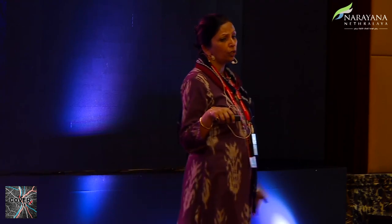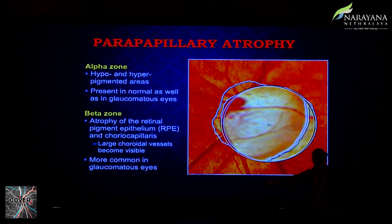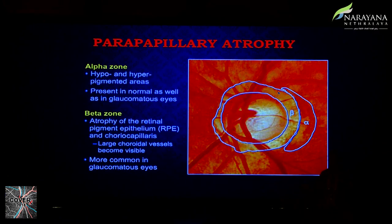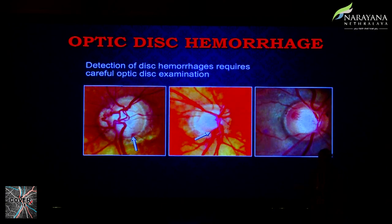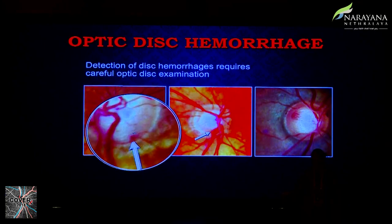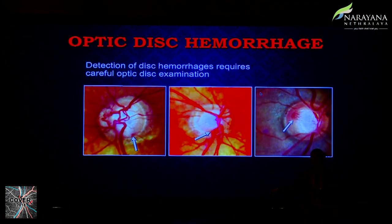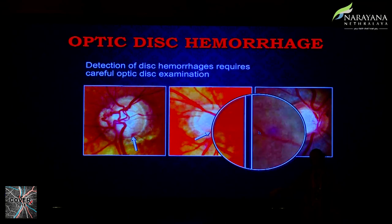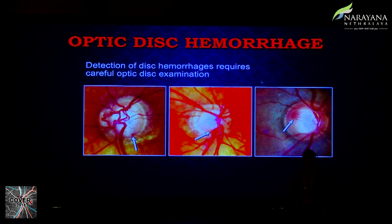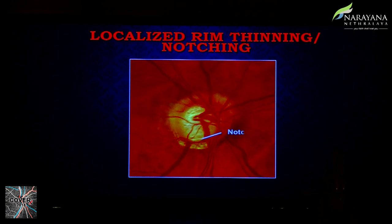Regarding parapapillary atrophy, the alpha zone is less relevant; what we are interested in is the beta zone — the atrophy of the retinal pigment epithelium where the choriocapillary vessels show through — which is definitely diagnostic of glaucoma. Optic disc hemorrhages can be very subtle and easily missed. They need to be followed up carefully, as they can lead to a notch, and inferior notching is almost pathognomonic of glaucoma.